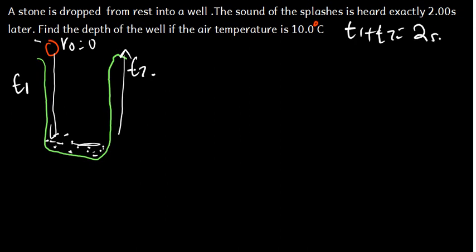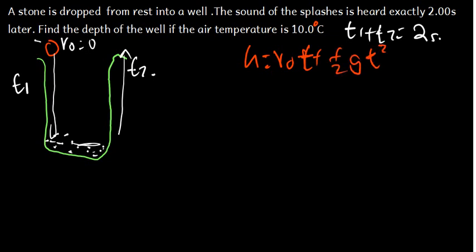When something is dropped from rest, the initial velocity is zero and it is under the influence of gravity. The displacement is equal to the initial velocity times time plus half GT squared. Since initial velocity is zero, that term cancels. So H equals half G T1 squared. Let's call this Equation 1.